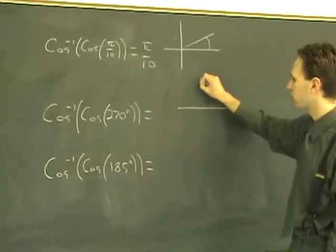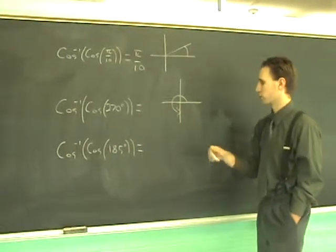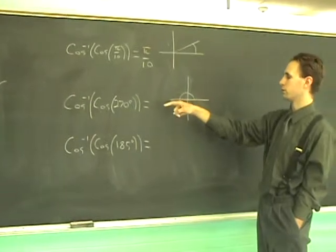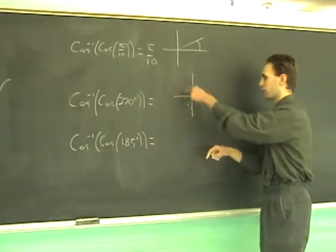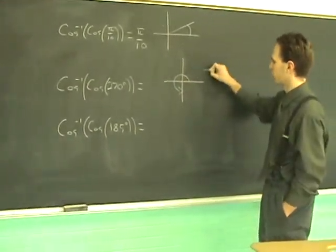Cosine inverse of the cosine of 270, 270 degrees all around here. Which angle is cosine inverse going to return to you when you take the cosine of it? Well, the cosine of 270 is 0, cosine inverse of 0 is the angle in this region that has a cosine of 0, and that's going to be pi over 2.